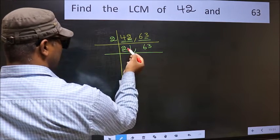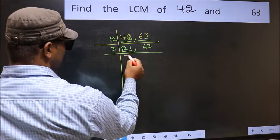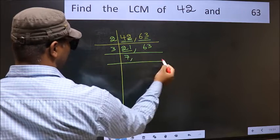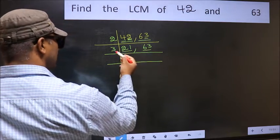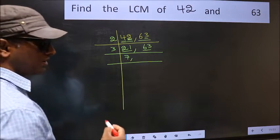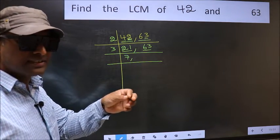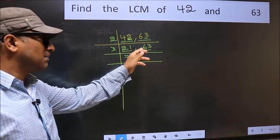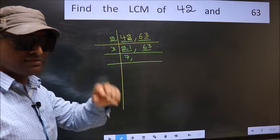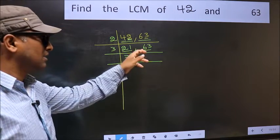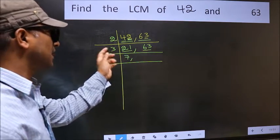Now here we have 21. 21 is 3 times 7 is 21. The other number 63. To check whether 63 is divisible by 3 or not, for that add the digits: 6 plus 3. We get 9, and 9 is divisible by 3. So this number is also divisible by 3.